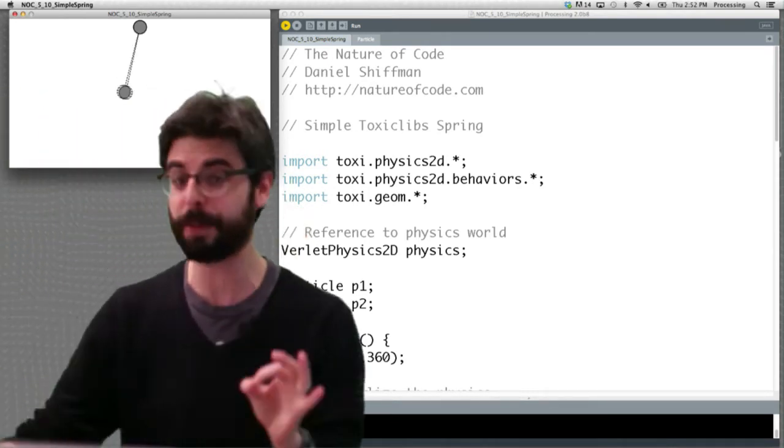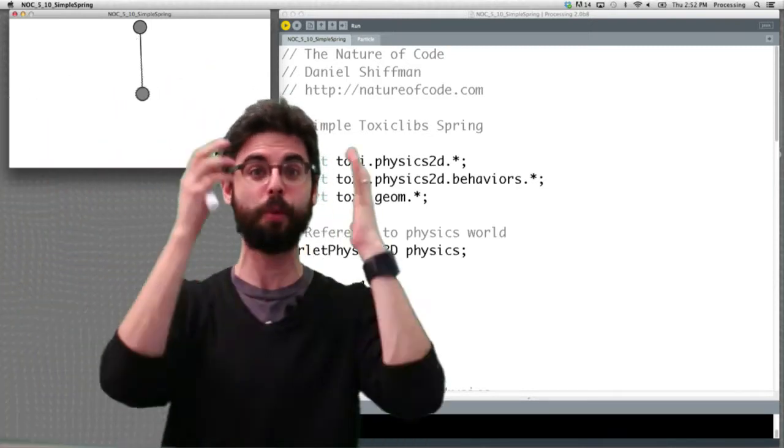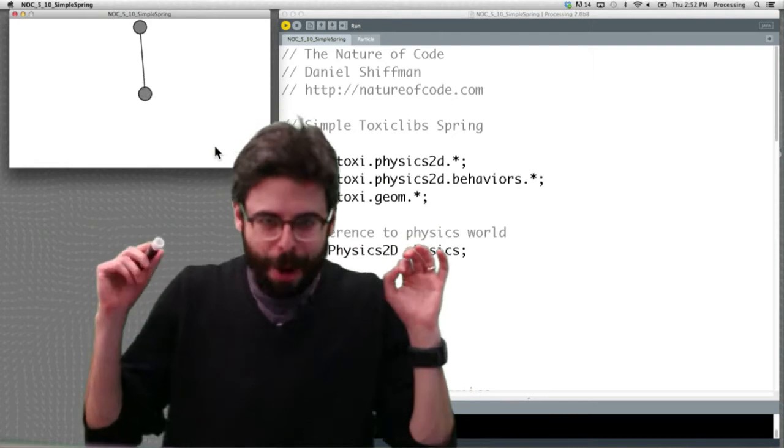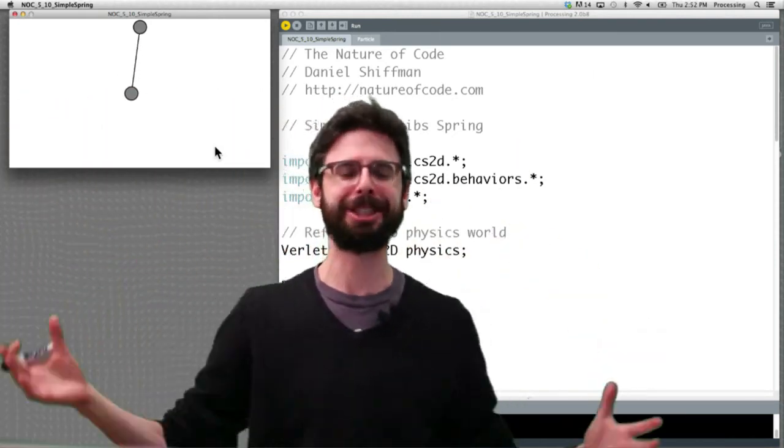It's a little bit elastic and bounces back and forth. This is a very simple system. It's got two particles in it and one spring connecting it and the world has gravity. So if we can understand how to make this, everything else we make in ToxicLibs is just an extension of this.